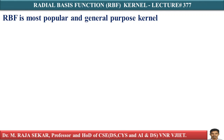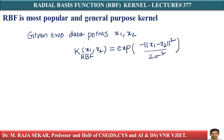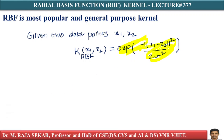A very, very general-purpose kernel is called RBF, or Radial Basis Function kernel. Given two data points x1 and x2, the RBF kernel formula is: K(x1, x2) = exp of minus norm(x1 minus x2) squared, divided by 2 sigma squared. This is the mathematical formula for the RBF kernel.